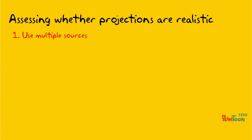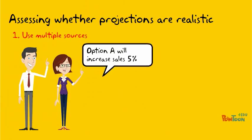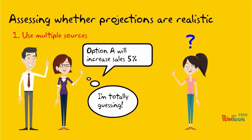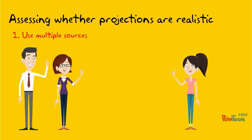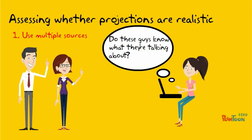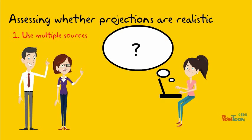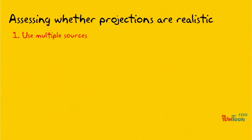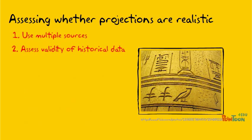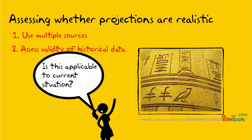For example, if a classroom case tells you that doing option A will increase your sales by 5%, think about where that information came from. Did one of the managers just pull that number out of the air? If they did, maybe you want to verify it with some research of your own. If there are no other sources to back up what the manager is telling you, think about how valid the manager's estimates are. Does he have enough experience in the industry to make reliable predictions?